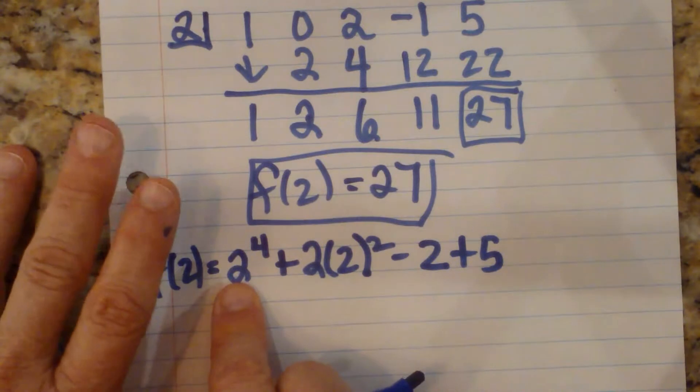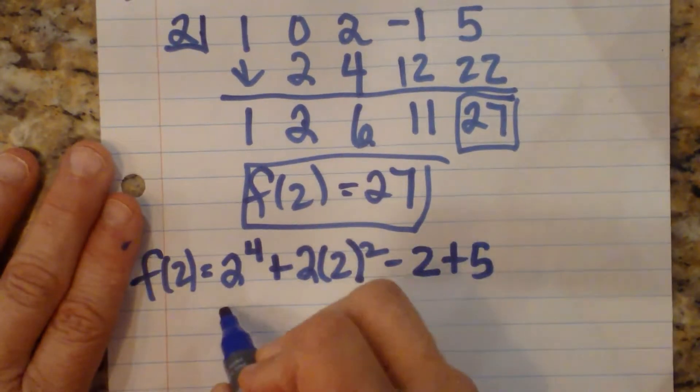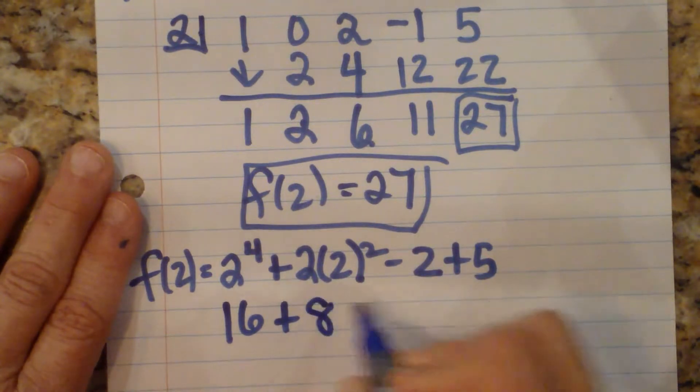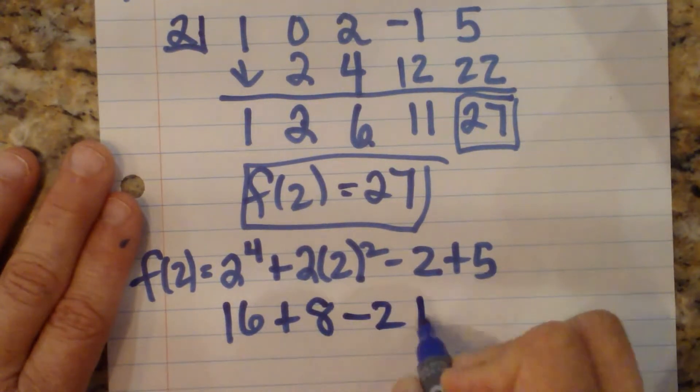2 to the 4th: 2 times 2 is 4, times 2 is 8, times 2 is 16, plus 4 times 2 is 8, minus 2 plus 5.